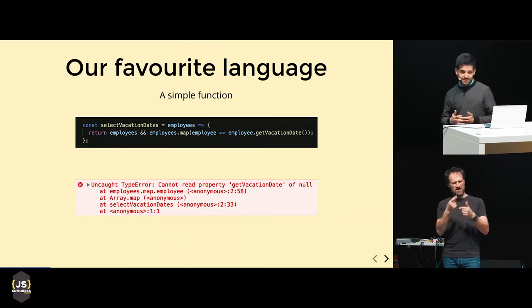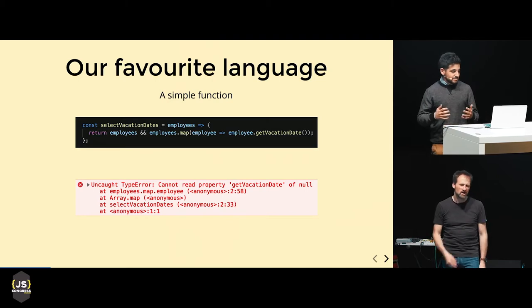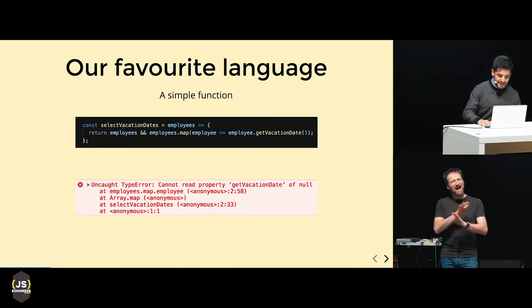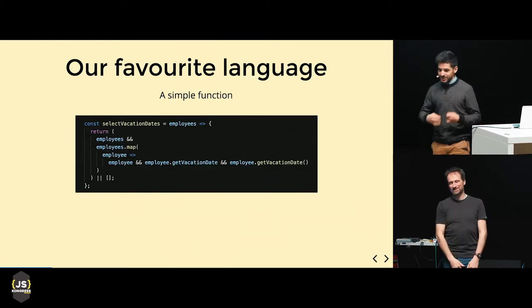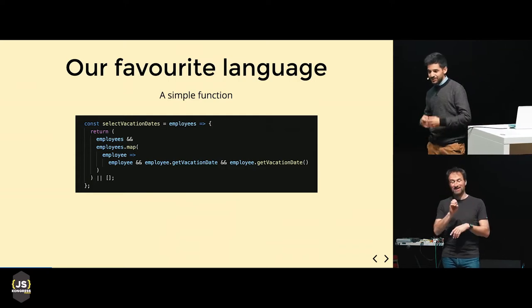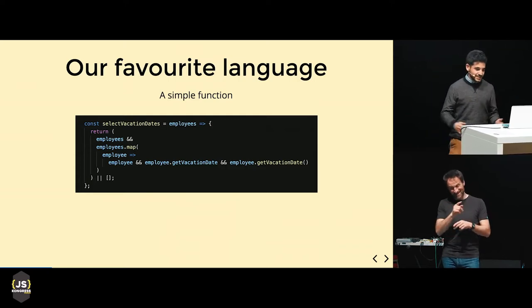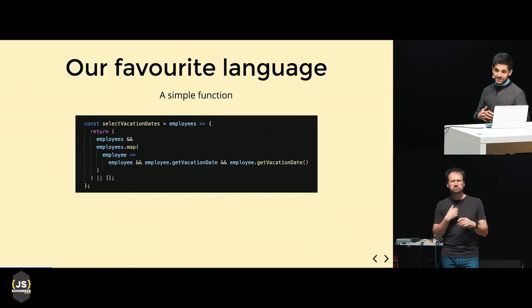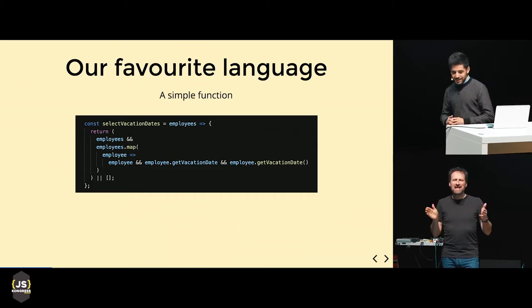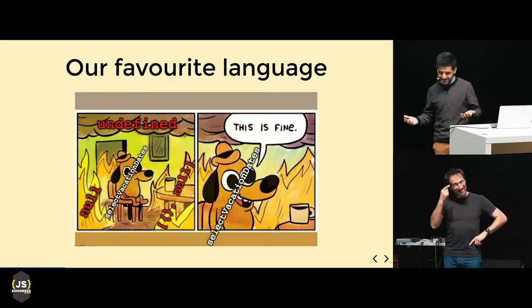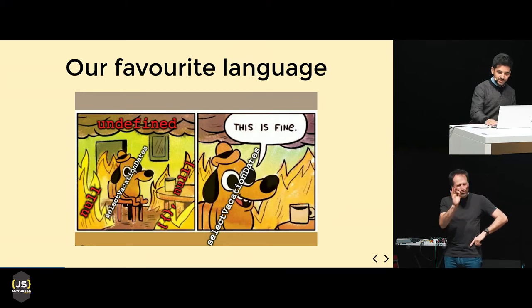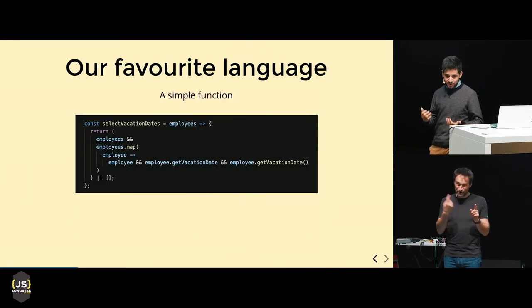So at this point I'm pretty tired of this, and I added basically every check I can. Our function starts to look like this — we check if employees is defined, we check that each employee is defined and has this method, and only then we call it. And just in case everything fails, we return an empty array. So we're just pretending that whatever we're getting is fine when obviously it's not. But we're not too proud of our code, though we're pretty sure it should work now.